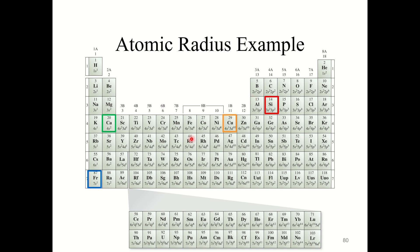Looking at the periodic table: silicon is closest to the top right, so it's the smallest. Francium is closest to the bottom left, so it's the largest. Calcium and copper are in the same period — the same row — but calcium is furthest left, so calcium is larger than copper. So the order is: silicon, copper, calcium, francium.